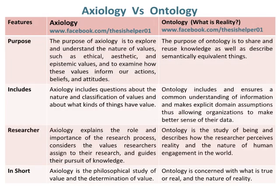The purpose of axiology is to explore and understand the nature of values, such as ethical, aesthetic, and epistemic values, and to examine how these values inform our actions, beliefs, and attitudes. Whereas, the purpose of ontology is to share and reuse knowledge as well as describe semantically equivalent things.